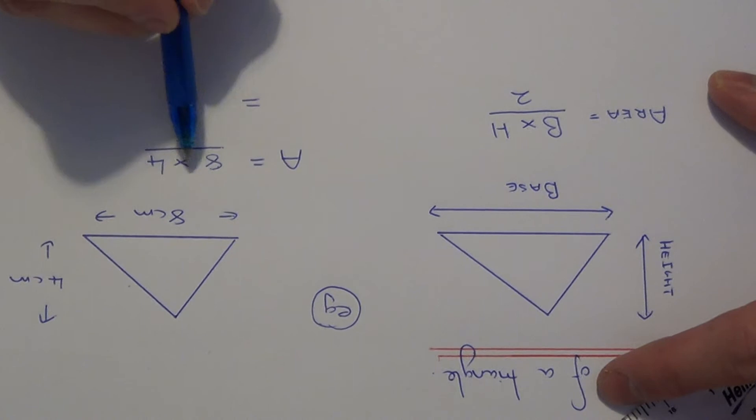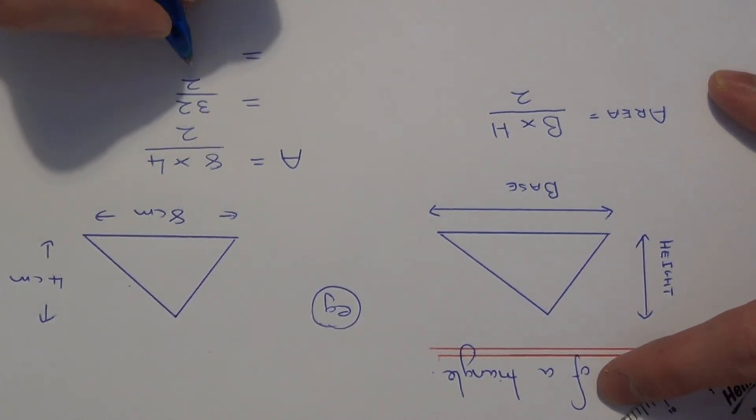8 times 4 is 32. Now we need to half the answer, so half of 32 is 16 centimeters squared.